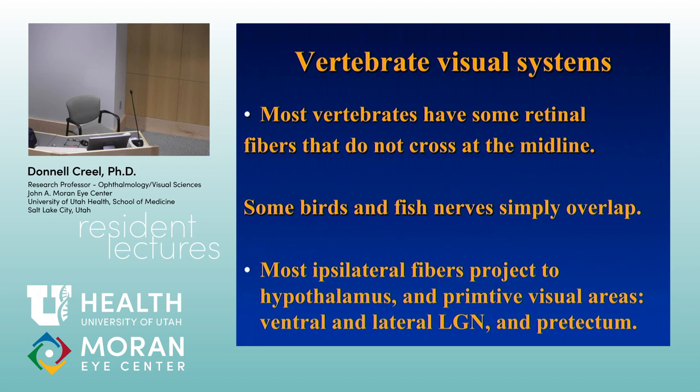Most fish have some ipsilateral fibers, but the most common genetic model in fish, the zebrafish, don't have any. I just want to express what the variation is.